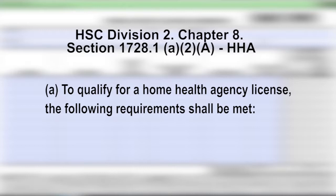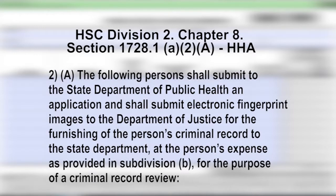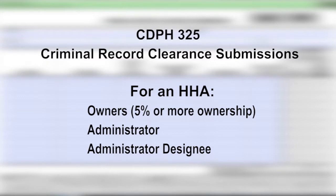The California Health and Safety Code, Division 2, Chapter 8, Section 1728.1 A2A states the following requirements regarding criminal record clearance for a home health license. To qualify for a home health agency license, the following persons shall submit to the State Department of Public Health an application and shall submit electronic fingerprint images to the Department of Justice for the furnishing of the person's criminal record to the State Department at the person's expense for the purpose of a criminal record review. For an HHA, submit the CDPH-325 form for the following individuals: owners having a 5% or more ownership, administrator and administrator designee. If the administrator is a doctor or registered nurse, he or she is subject to the same requirements for a criminal record clearance.